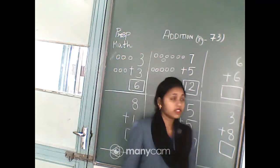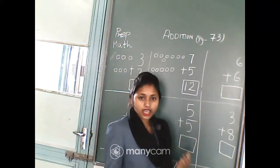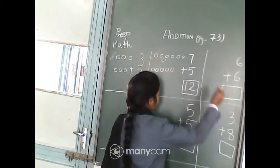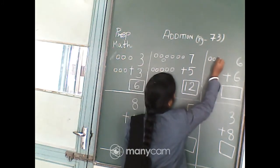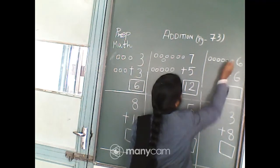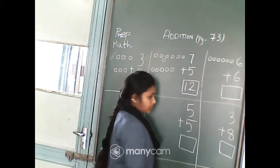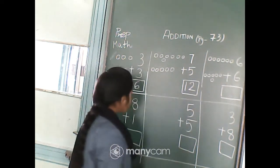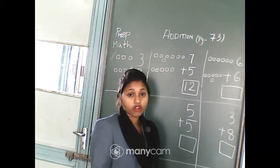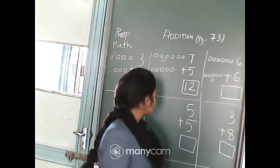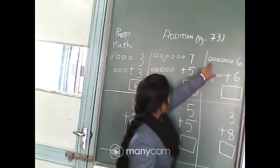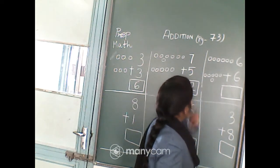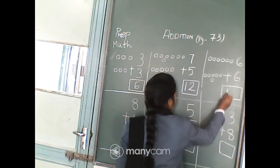Now students, third one: 6 plus 6. As same, we will draw 6 circles first, then again 6 circles. First: 1, 2, 3, 4, 5, 6. Again we will draw 6 circles: 1, 2, 3, 4, 5, 6. Now we will count all together — 6 plus 6, all the circles together: 1, 2, 3, 4, 5, 6, 7, 8, 9, 10, 11, 12. So 6 plus 6 is 12.